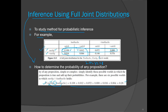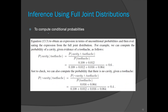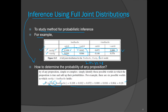This is how you can determine the probability of any proposition, but the requirement is that you need a full joint distribution of that environment. Next, to compute conditional probabilities, you use the product rule. For example, probability of cavity given toothache equals probability of cavity AND toothache divided by probability of toothache. The values are taken directly from the table. Probability of toothache is the sum over all four possible worlds where toothache is true.